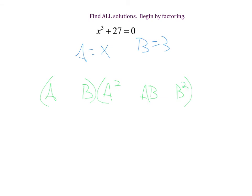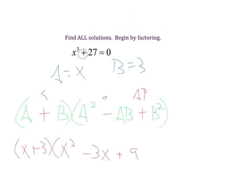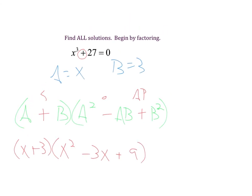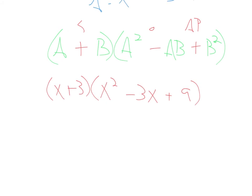To figure out the operators, I'll use the SOAP acronym: same, opposite, always positive. Now we plug and chug. So I've got (x + 3)(x² - 3x + 9). First factor is going to give you the clean, easy number: x equals negative three. Huzzah.